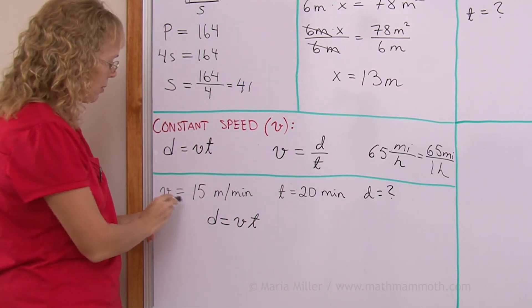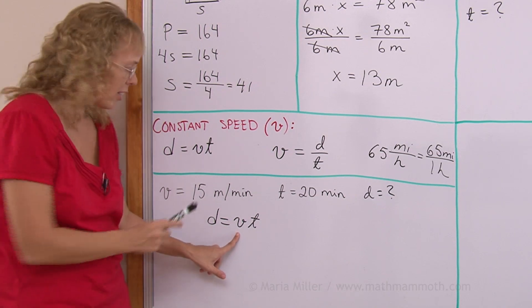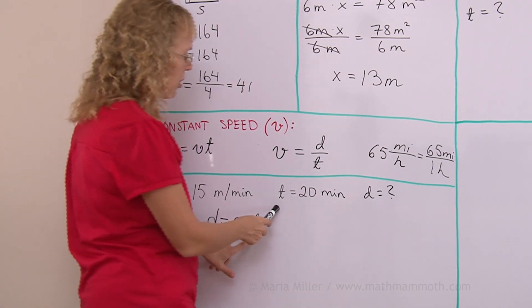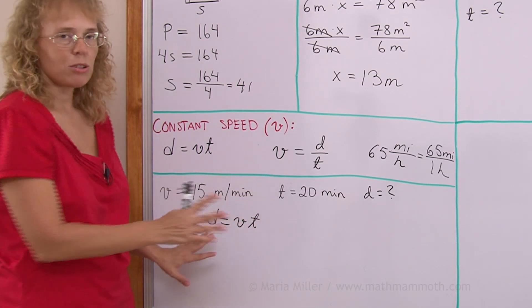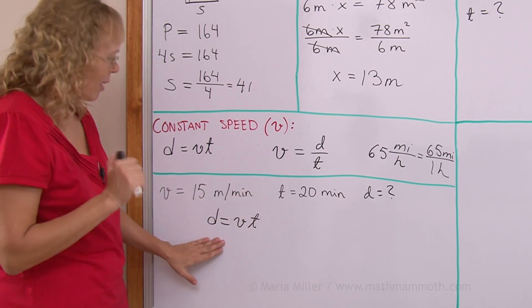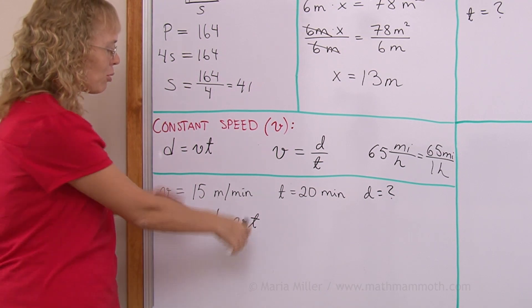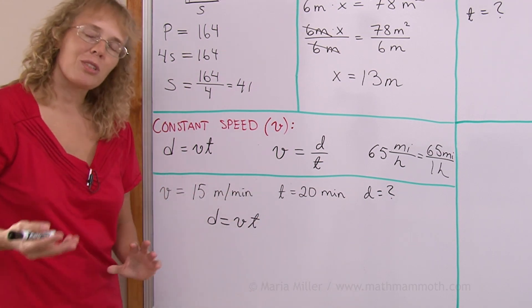Distance equals velocity times time. And now I will substitute. In place of V, I substitute 15. In place of T, I substitute 20 minutes. This is a very simple situation that you can solve without using the formula, I know. But we are practicing this so that we learn how to do these motions when the problems are more difficult.